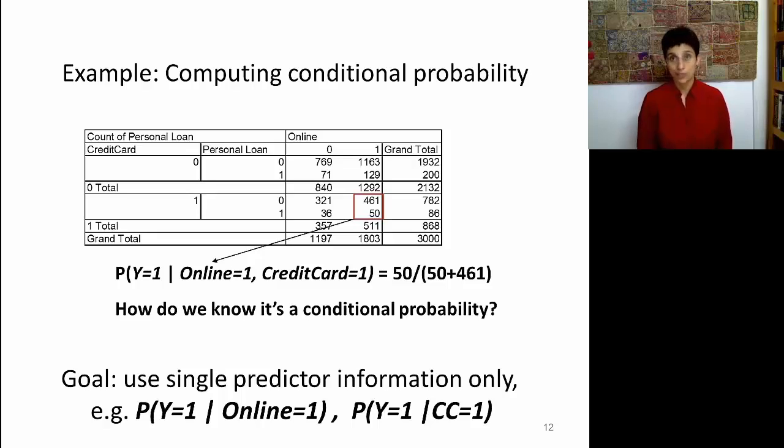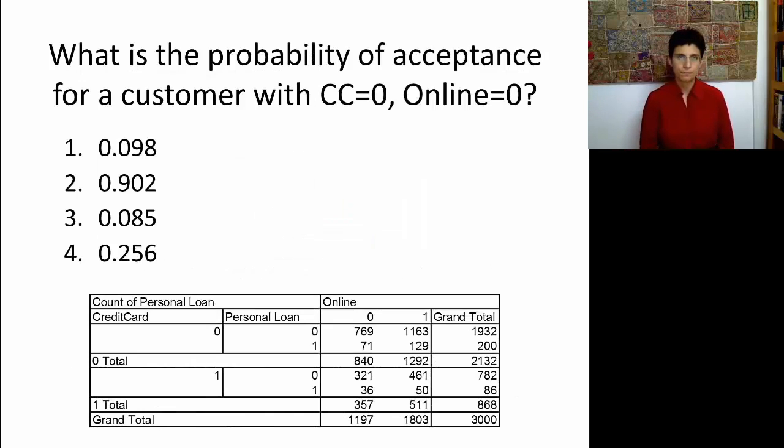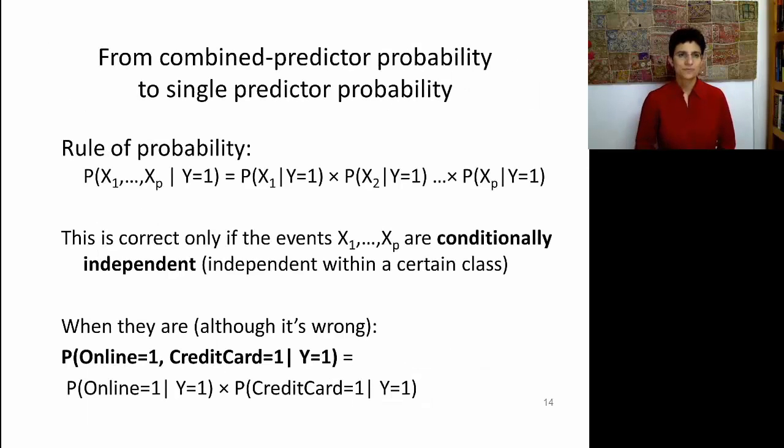Let's go back to our pivot table. How do I know that this number that we computed, 50 divided by 511, is a conditional probability and not just a cross probability? The reason is that we conditioned by looking at a particular column and a particular row, and then divided the numbers accordingly. That's what tells us that we're looking at conditional probability when we're looking at a pivot table. Instead of looking at this cross table, we're going to look at two separate pivot tables, one for Y and online, and the other one for Y and credit card. Just to make sure you've figured out how to estimate conditional probability using a pivot table, suppose we have a customer who does not have a credit card and does not do online banking. What's the probability that that customer will accept the offer? Stop the video and see if you can figure this out.